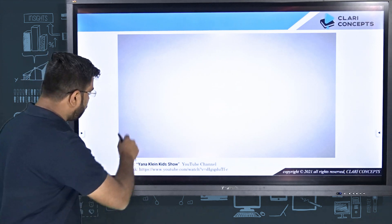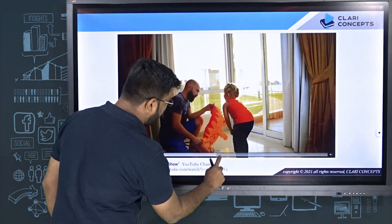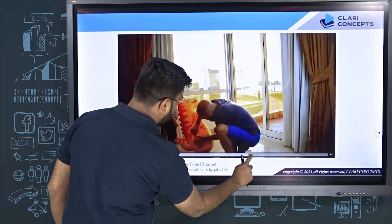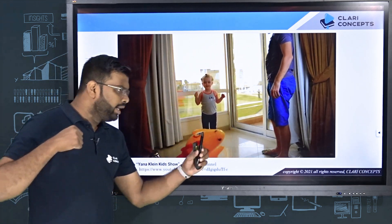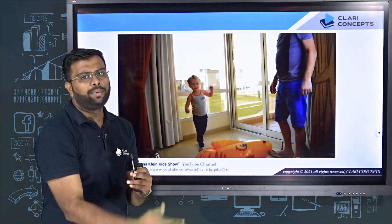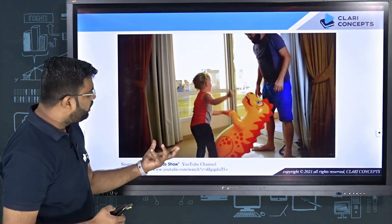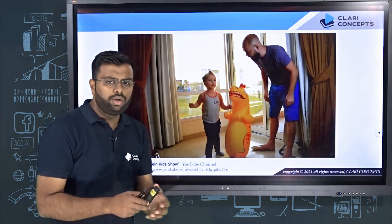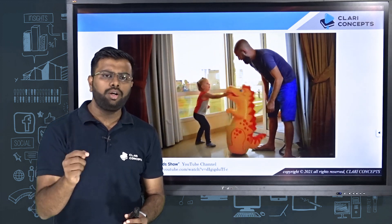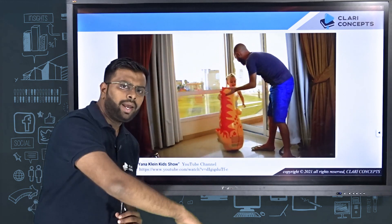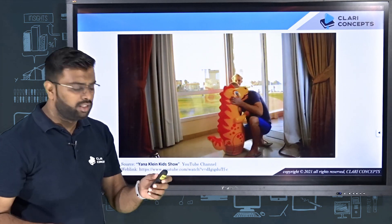I have a video from Yana Clan's kid show where a parent is playing with his kid with a toy called a punching toy. This is a toy wherein if a kid punches the toy, the toy falls down and again comes back to an upright position. There is no attachment of this toy with the ground — the toy is totally free. So why does this happen? How does this toy fall and come back to its original position? There is no electronics involved — what is the physics behind this?